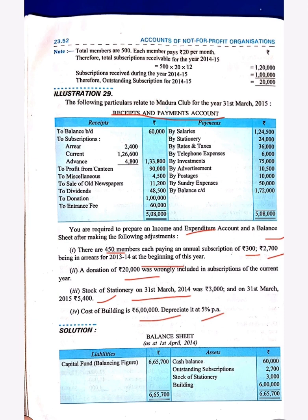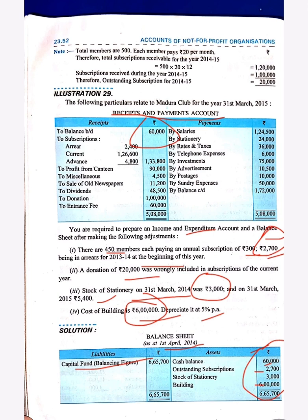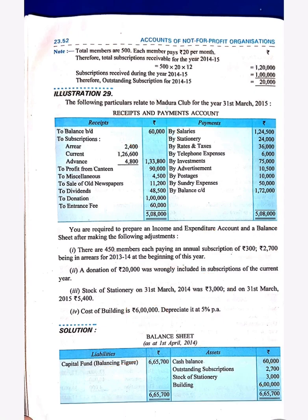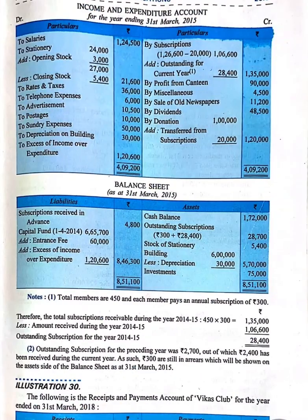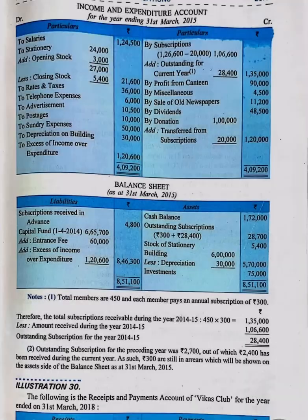First of all, let's make the opening balance sheet — that is, balance sheet as on 1st April 2014. Cash balance of 60,000 will be written here. Outstanding subscription of the previous year, 2,700, will be shown here. Stock of stationery and clothing of the previous year, 3,000, will be here, and cost of building, 6,05,000, will be here. The total will be transferred to capital fund, giving a balancing figure of 6,065,700 as capital fund.